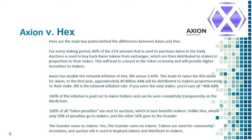For Axion, in the first year, approximately 40 billion AXN will be distributed to stakers proportionately to their stake — 8% is the network inflation rate. If you were the only staker, you'd earn all 40 billion AXN. 100% of the inflation is paid out to Axion holders and can be seen completely transparently on the blockchain.